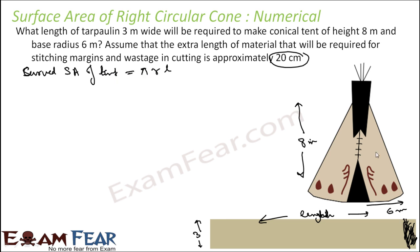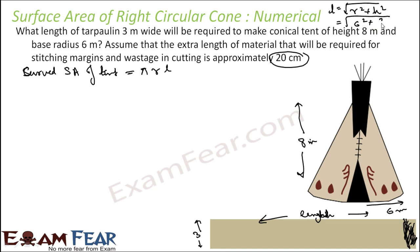We know r but we don't know l, so we find l = √(r² + h²). With r = 6 and h = 8: √(36 + 64) = √100 = 10. So l = 10 meters. Putting values: CSA = (22/7) × 6 × 10, in meter square.